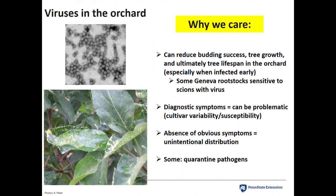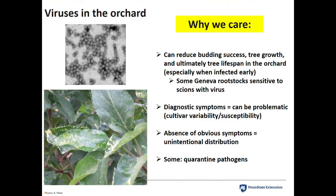What can be frustrating diagnostically is that some viruses show no symptoms — they can be latent. The symptomology can also be influenced by cultivars and susceptibility. The viruses are smart: they propagate themselves and you can have unintentional distribution from a virus-infected plant showing no symptoms, with no ability to stop it. Some viruses are also very important quarantine pathogens. Remember plum pox virus that affected Pennsylvania? A very important quarantine pathogen.